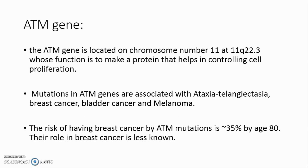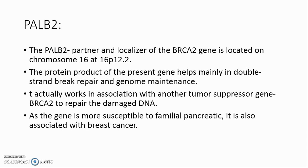ATM gene: the ATM gene is located on chromosome 11 at 11q22.3, and its function is to make a protein that helps in controlling cell proliferation. PALB2: the PALB2 (Partner and Localizer of BRCA2) gene is located on chromosome 16 at 16p12.2. The protein product of this gene helps mainly in double-strand break repair and genome maintenance.